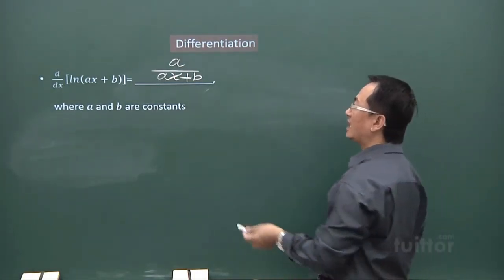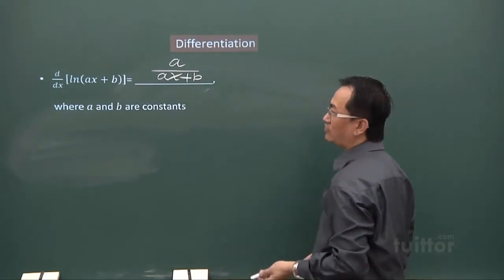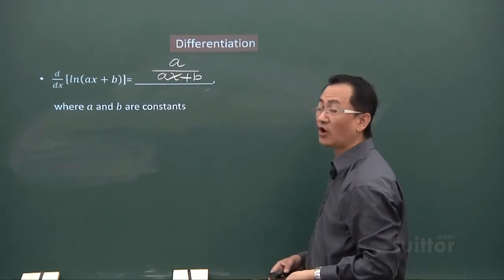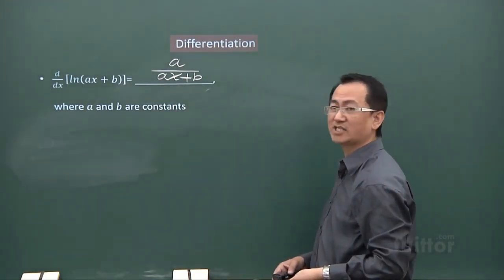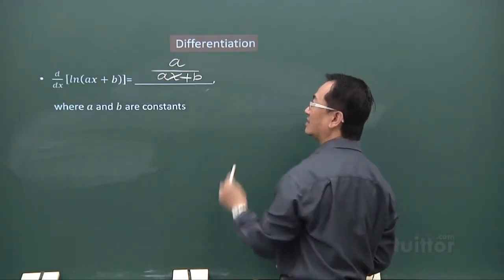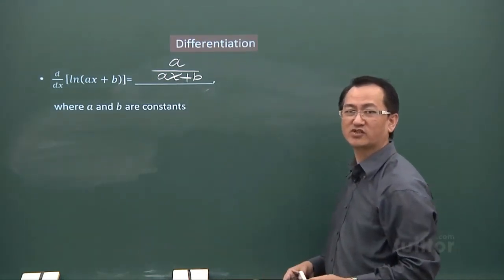So, the expression, the final result for differentiation of ln bracket ax plus b will just be this. It is always in fractional form.